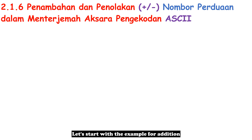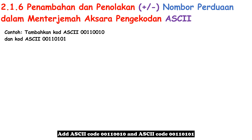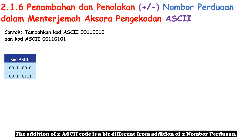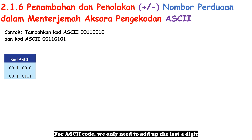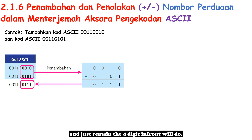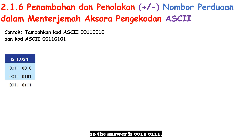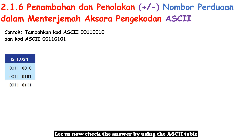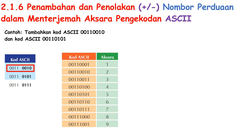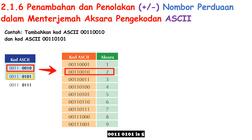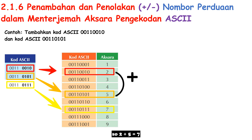Example for addition: add ASCII code 00110010 and ASCII code 00110101. The addition of 2 ASCII codes is a bit different from addition of 2 Nombor Perduaan. For ASCII code, we only need to add up the last 4 digits and keep the 4 digits in front. So the answer is 00110111. Checking with the ASCII table: 00110010 is 2, 00110101 is 5, and 00110111 is 7 — so 2 plus 5 equals 7.